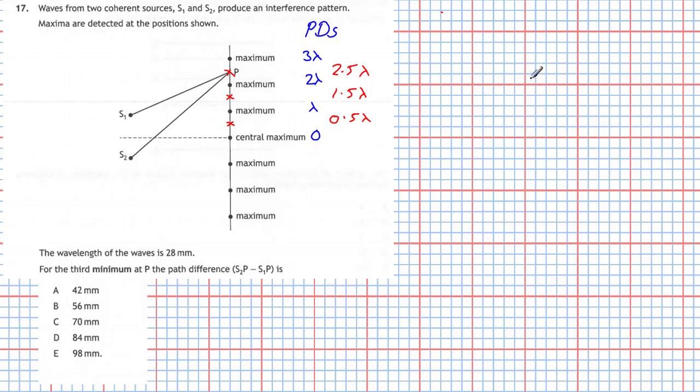So from our diagram, we know that the path difference, which we know is equal to S2 P take away S1 P. So what is the path difference in this case? The path difference is going to be 2.5 wavelengths to the third minimum. But we know what a wavelength is, it's 28 millimeters. So therefore, we have the path difference S2 P take away S1 P. The path difference must be equal to 2.5 wavelengths, which is 2.5 times 28 millimeters. So we work that out in our calculator, we get an answer of 70 millimeters. So the path difference between S2 P and S1 P must be 70 millimeters, which is answer C.